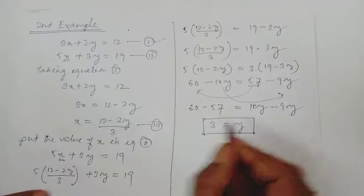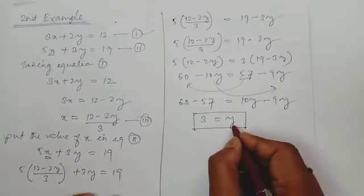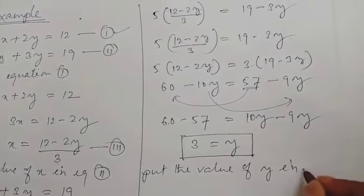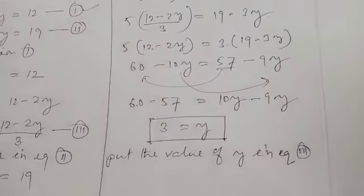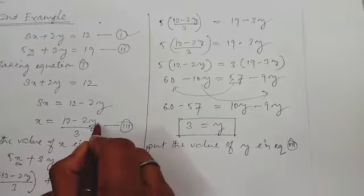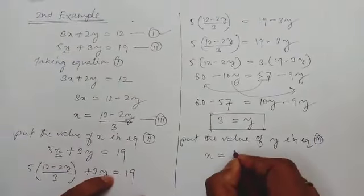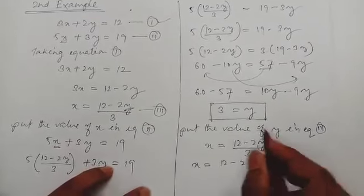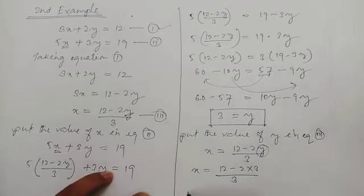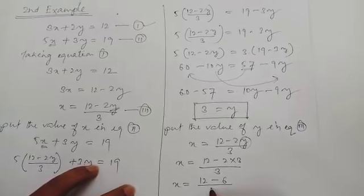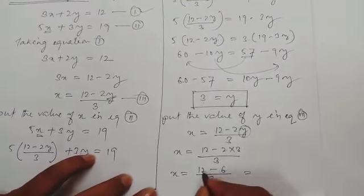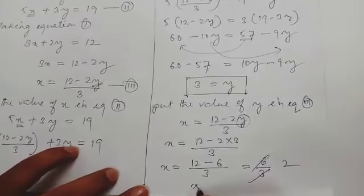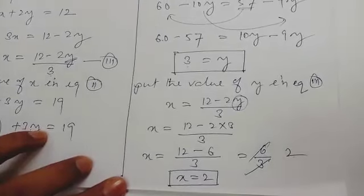Now put the value of y in equation 3. Equation 3 is x equal to 12 minus 2y divided by 3. In place of y we put 3: x equal to (12 minus 2 times 3) divided by 3, which is (12 minus 6) divided by 3, equal to 6 divided by 3, so x equal to 2.